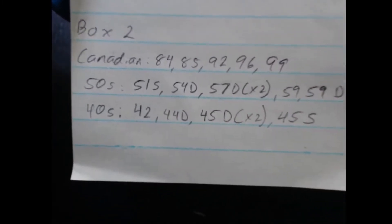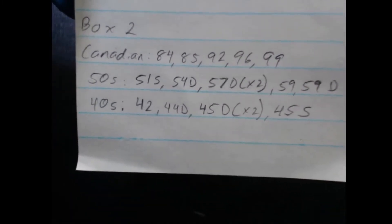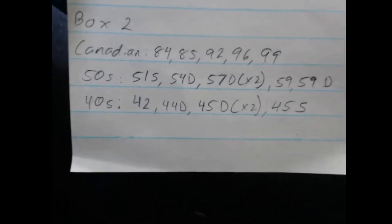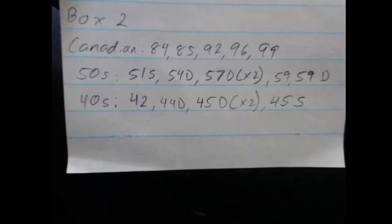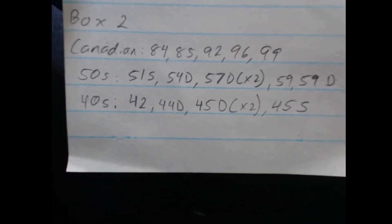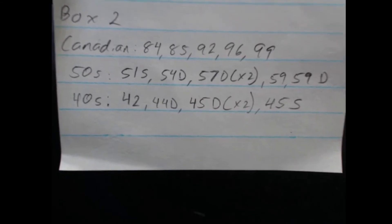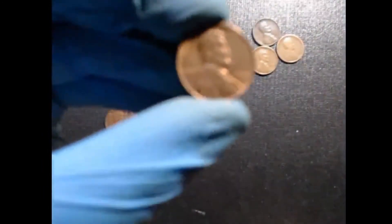For the second box, in the Canadians, I got an 84, 85, 92, 96, and 99. In the 50s, I found a 51S, 54 Denver, two 57 Denvers, a 59 Philadelphia, and a 59 Denver. So I do want to show you this one.